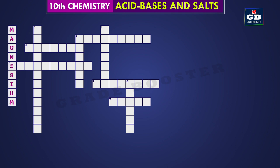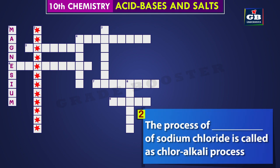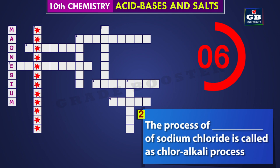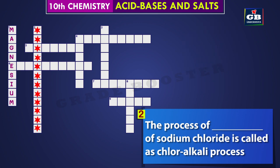Let's see the second one — two down. The process of dash of sodium chloride is called the chloralkali process. Can you guess it? The answer is electrolysis. The process of electrolysis of sodium chloride is called the chloralkali process.